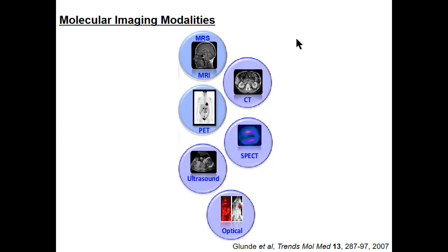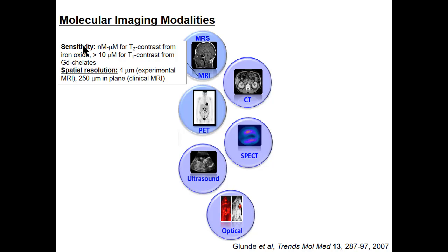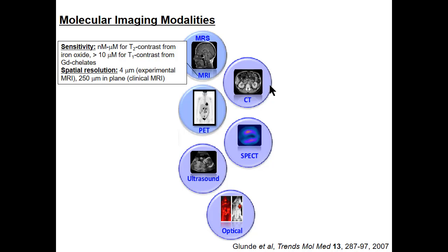I'm going to talk about the sensitivities and spatial resolutions of all the different modalities available for molecular imaging. We have magnetic resonance imaging and its sister magnetic resonance spectroscopy. In terms of sensitivity, we're looking at nano to micromolar concentrations for T2 — such as an iron oxide, as we already heard about — and around 10 micromolar and up for T1 contrast from gadolinium chelates. Spatial resolution is 4 microns in experimental approaches, and around 250 micrometers for clinical MRI. MR spectroscopy for protons is in the millimolar range, less sensitive than with contrast agents in MR.